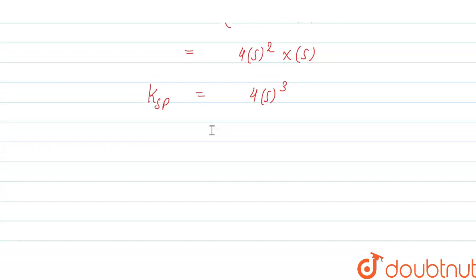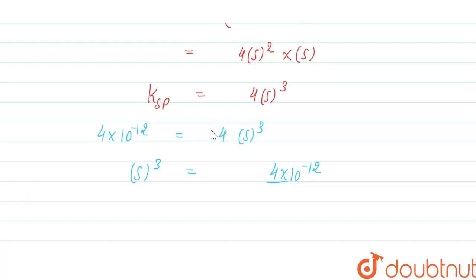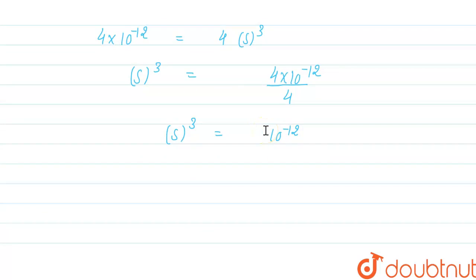We know that Ksp of Ag₂CrO₄ = 4×10⁻¹². Setting this equal to 4s³: 4×10⁻¹² = 4s³. Rearranging: s³ = 4×10⁻¹² / 4 = 10⁻¹².